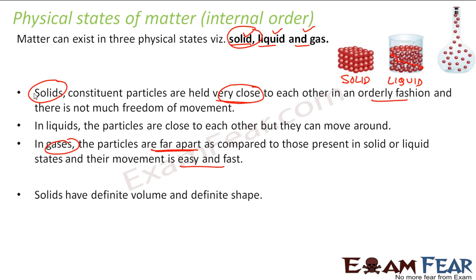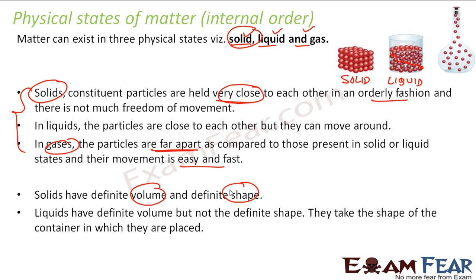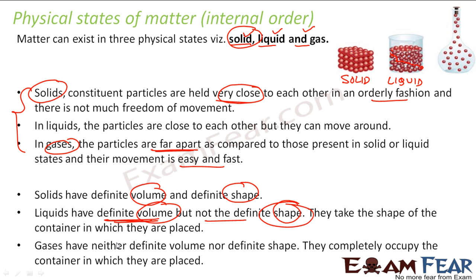Because of these properties, solids have a definite volume and definite shape. For example, a log of wood has a definite volume and definite shape. Liquids have a definite volume but not a definite shape — if you pour a liquid into different vessels, it takes the shape of those vessels, but the volume stays the same. Gases have neither definite volume nor definite shape — they completely occupy the container in which they are placed.